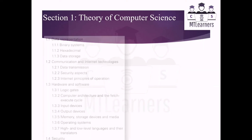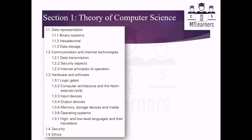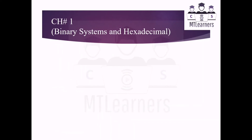Now let's move towards Section 1, Theory of Computer Science. This includes five major parts: data representation, communication and internet technologies, hardware and software, security, and ethics. In data representation, binary systems, hexadecimals, and data storage are included. In communication and internet technologies, data transmission, security aspects, and internet principles of operation are covered. In hardware and software, logic gates, computer architecture, fetch-execute cycle, input devices, output devices, memory, storage devices, and media are included, along with operating systems and high and low level languages and their translators.